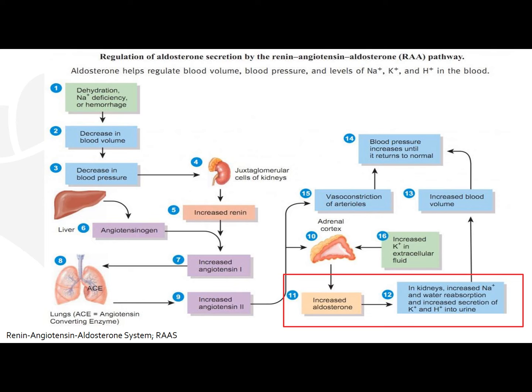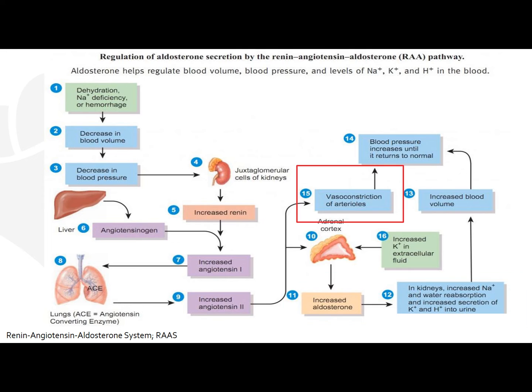The ultimate effect of that is an increased blood volume. The other potent effect of angiotensin 2 is that it is a potent vasoconstrictor, and that is why you see an increase in blood pressure.